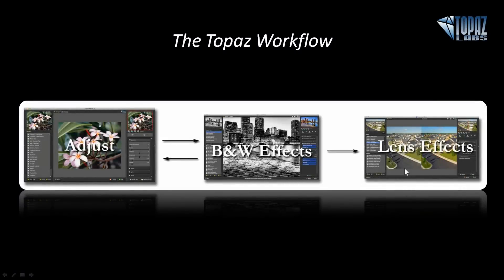For the second tier — Adjust, Black and White Effects, and Lens Effects — Adjust and Black and White Effects are kind of interchangeable. They have very similar ways of adjusting the image with adaptive exposure technology. We suggest putting Lens Effects after Adjust or Black and White Effects, because Lens Effects has filter technology simulating actual filters, and also lens simulation allowing you to add bokeh and beautiful creative blur. You want that blur to come after you've done your adjustments.